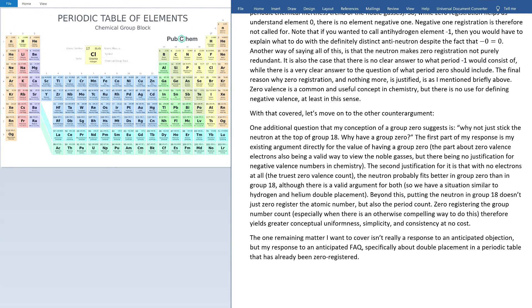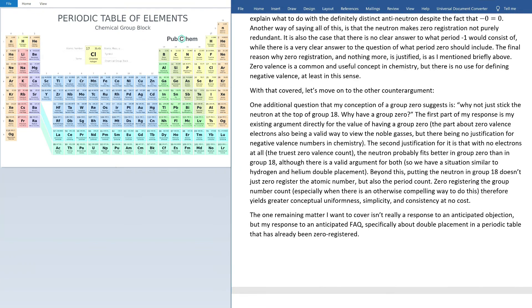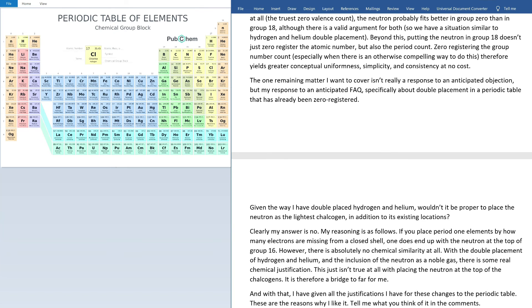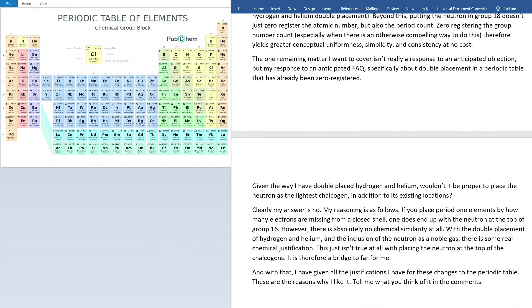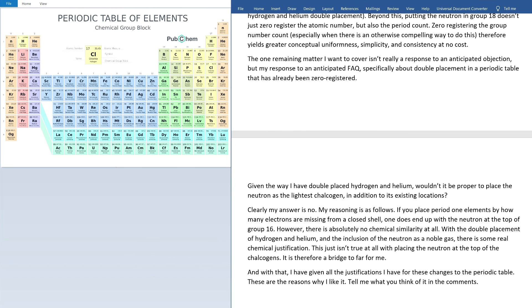Now, before I finish here, there is one remaining matter that I want to cover. It isn't really a response to an anticipated objection, but instead my response to an anticipated FAQ, specifically about double placement in a periodic table that has already been zero registered. The question is this, given the way I have double placed hydrogen and helium, wouldn't it be proper to place the neutron as the lightest chalcogen in addition to its existing locations? Clearly, my answer is no, given that I haven't put the neutron over here. My reason is as follows. If you place period 1 elements by how many electrons are missing from a closed shell, one does end up with the neutron at the top of group 16. However, there is absolutely no chemical similarity at all. With the double placement of hydrogen and helium, and the inclusion of the neutron as a noble gas, there is some real chemical justification. However, this just isn't true at all for placing the neutron at the top of the chalcogens. So doing that is a bridge too far for me.